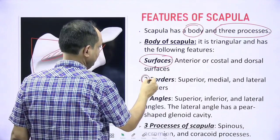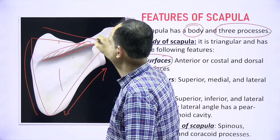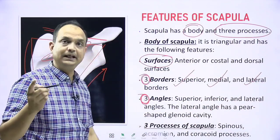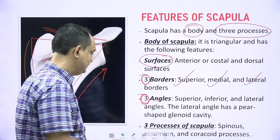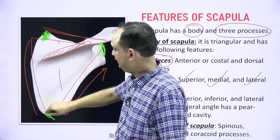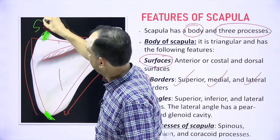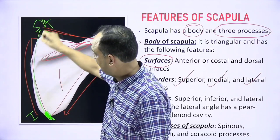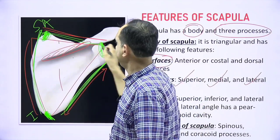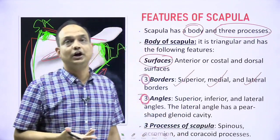There are three borders: lateral border, medial border, and superior border. There are also three angles: superior angle, inferior angle, and lateral angle. The lateral angle is where you have the glenoid cavity, which forms the shoulder joint. The line between superior and inferior angle is the medial border. The area between the lateral angle and inferior angle is the lateral border — which is the thickest. Between the superior and lateral angle you have the superior border.